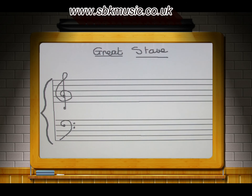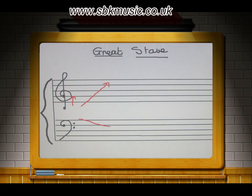A nice little mind trick to remember this: the treble clef represents mid to higher notes, so we place it on the second line up, and the bass clef represents mid to low notes, so we place it on the second line down. Up note — treble. Down — bass.